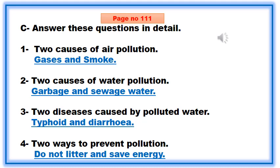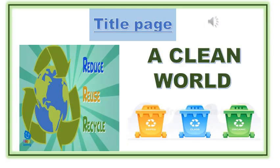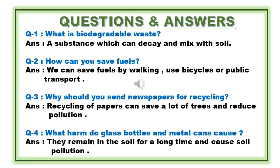Number four: two ways to prevent pollution — answer: do not litter, and save energy. Dear students, hopefully all of you have understood each and everything, but if you have any inquiries you are free to ask. Copy work should be done in your next class. Book work has been completed; now you will prepare for the written work of chapter number 13.